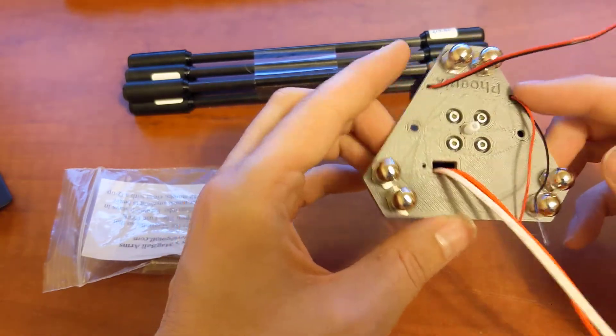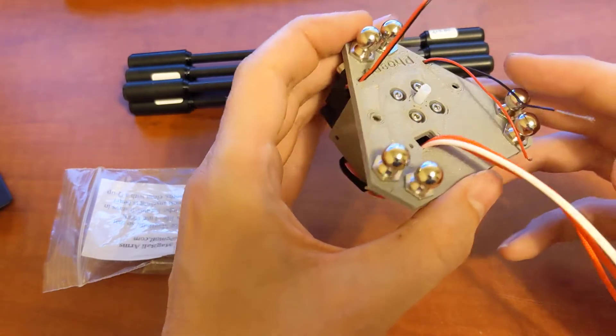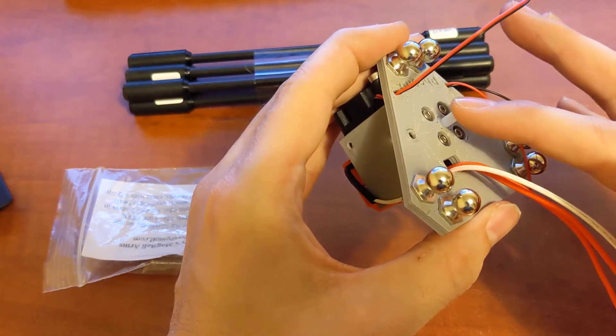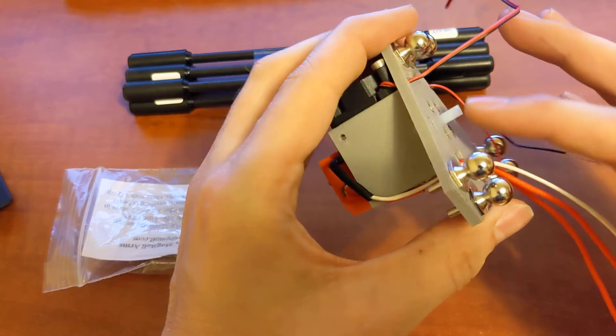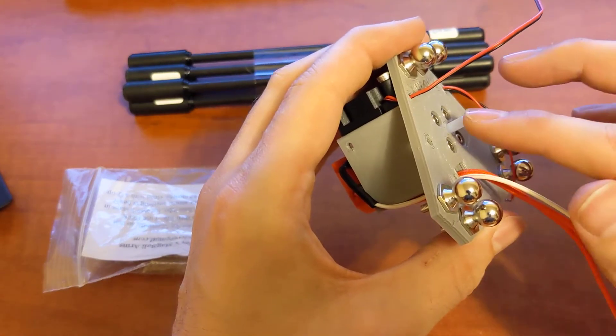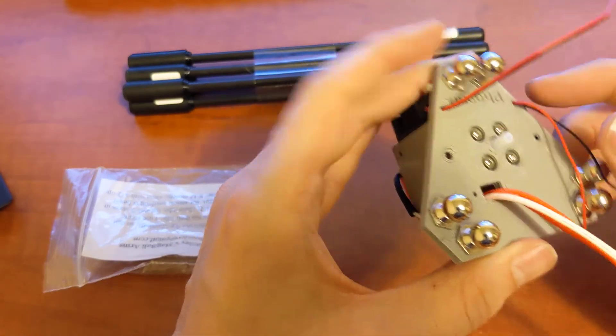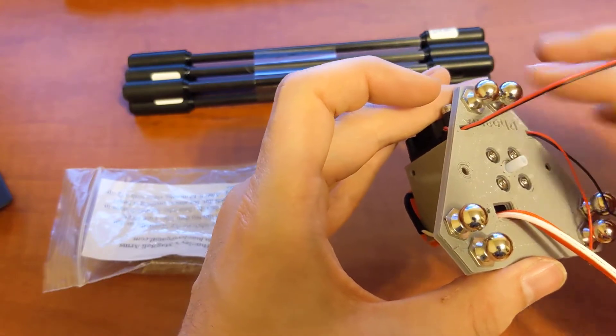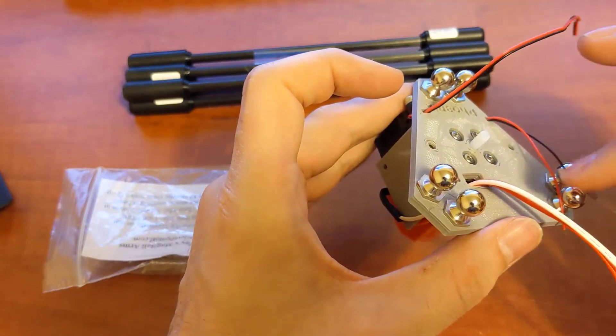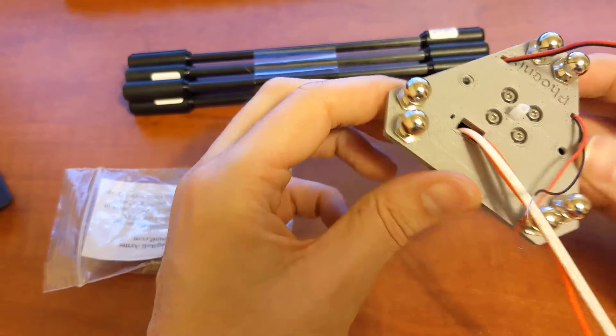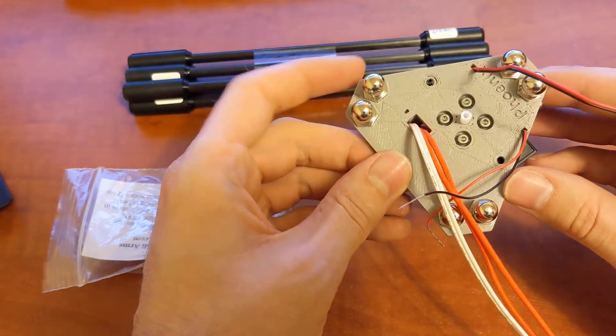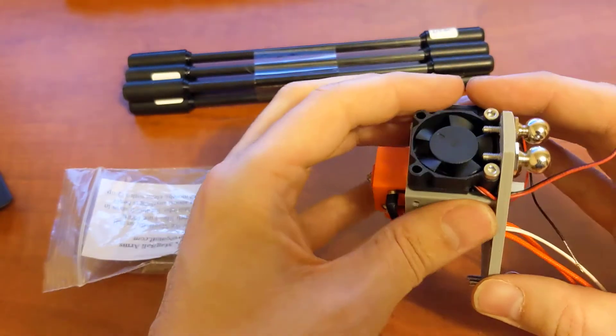You can see here I also have a direct drive setup, so there's a PTFE tube here, just a really short one here that will actually go into the Sherpa mini extruder. You can see my ball ends here, stainless steel ball ends. There's six of them, and that's what the arms attach to magnetically.